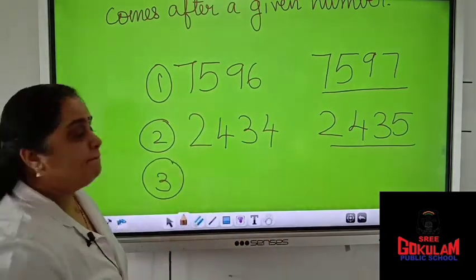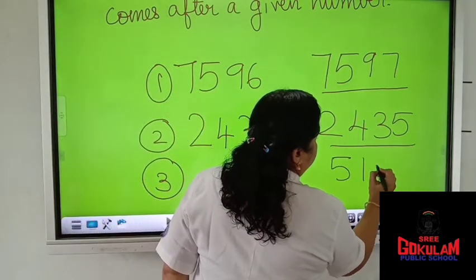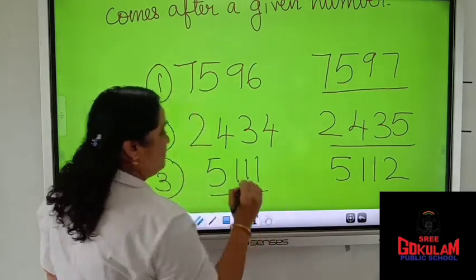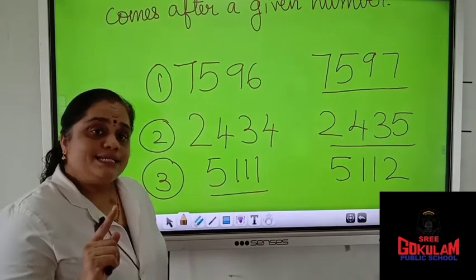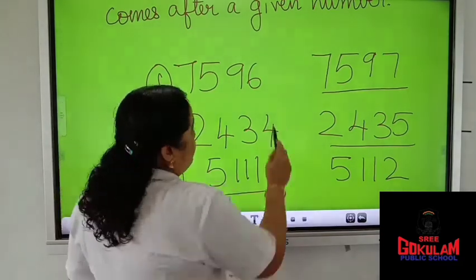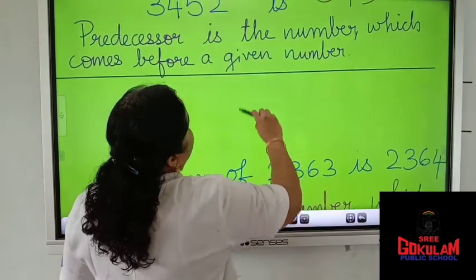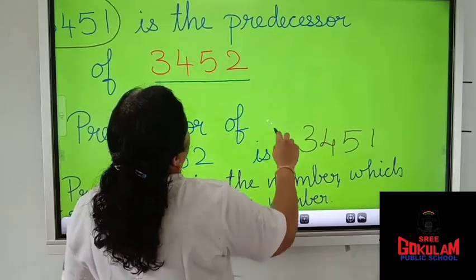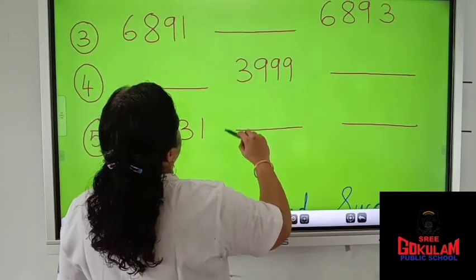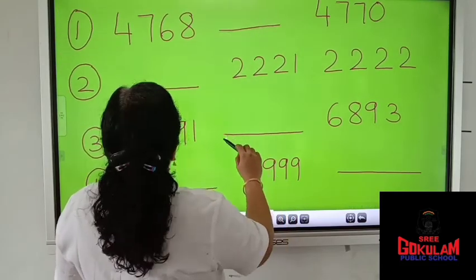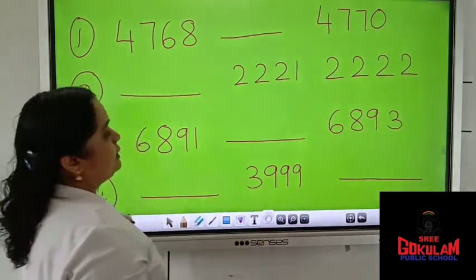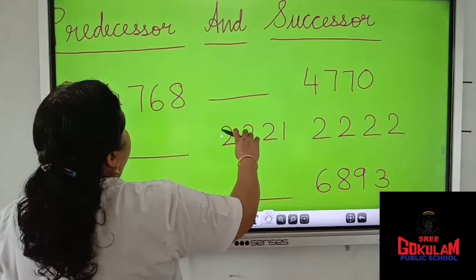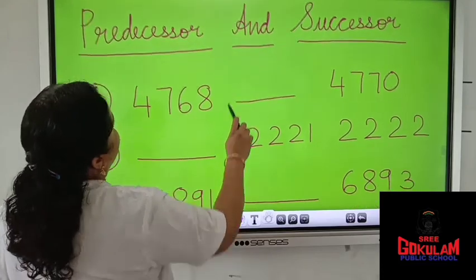Which number will come before 5,112? 5,111. I hope you understood. Let us do one exercise for better understanding. I have given an exercise here so that my children can better understand. Are you ready? Let's do it.